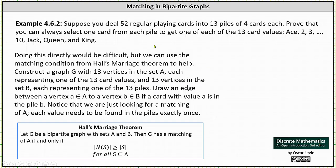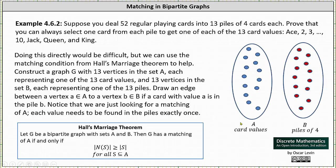This indicates the start of the graph would look like this, where again, set A contains 13 vertices for the 13 card values, and set B contains 13 vertices for the 13 piles of 4.